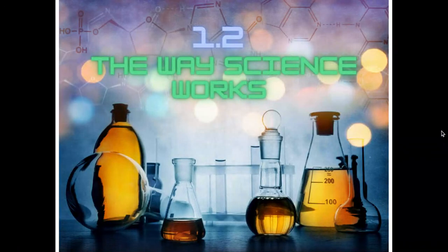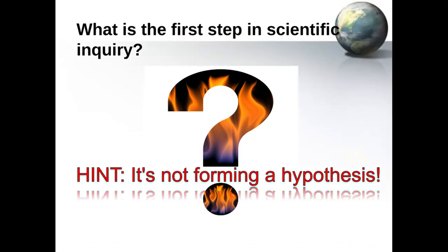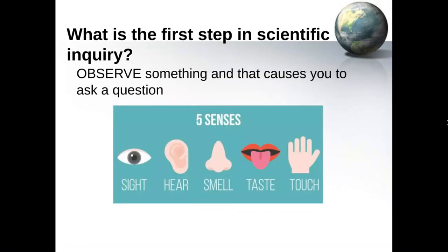1.2. The way science works. What is the first step in scientific inquiry? Hint, it's not forming a hypothesis. Something has to happen before that. The first step is observing something in nature, and that's going to cause you to ask a question. We use our five senses to make observations, like seeing, hearing, smelling, tasting, or touching.